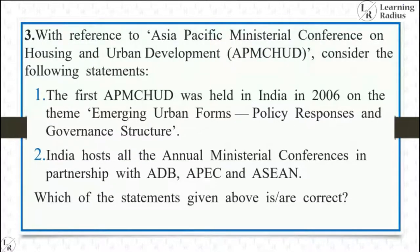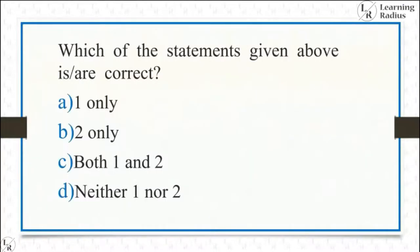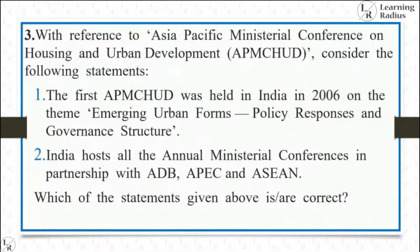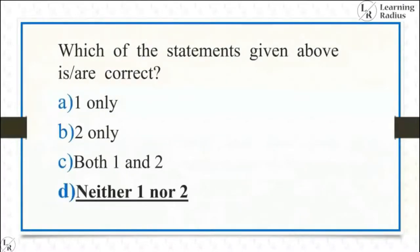Third question — with reference to the Asia-Pacific Ministerial Conference on Housing and Urban Development: (1) The first APMCHUD was held in India in 2006 on the theme 'Emerging Urban Forms, Policy Responses and Governance Structure' — that theme is wrong; (2) India hosts all annual ministerial conferences in partnership with ADB, ESCAP, and Asia — also wrong. Answer: neither one nor two.